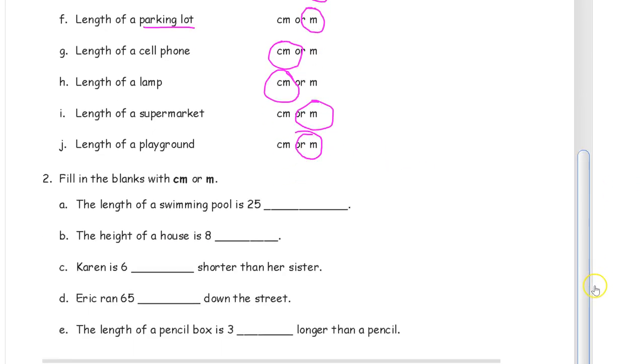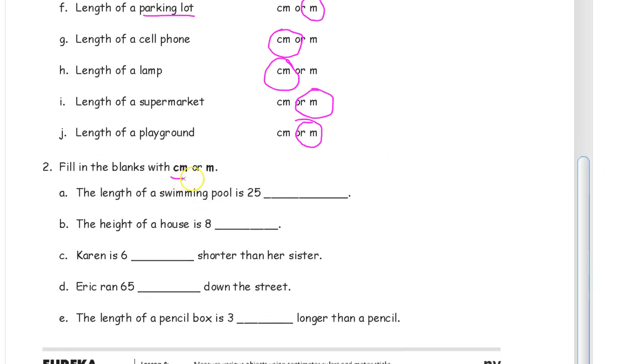And then now we're on at number two. Fill in the blanks with CM for centimeter, M for meter. The length of a swimming pool is 25 meters. It would be a really tiny swimming pool if it was centimeters. Like a swimming pool for ants or something. That would not even be the whole length of a ruler if it was 25 centimeters. The height of a house, that's going to be in meters.